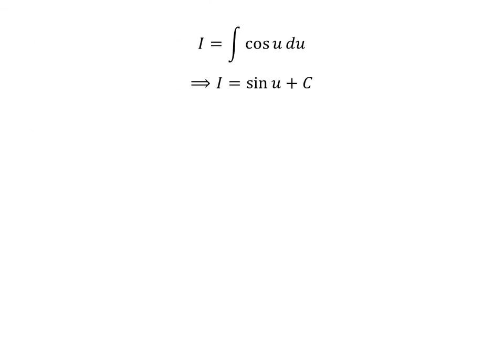We know the integral of cosine of u with respect to u is sine of u, so I is equal to sine of u plus C. C is the arbitrary constant of indefinite integral. Never forget to add this constant.